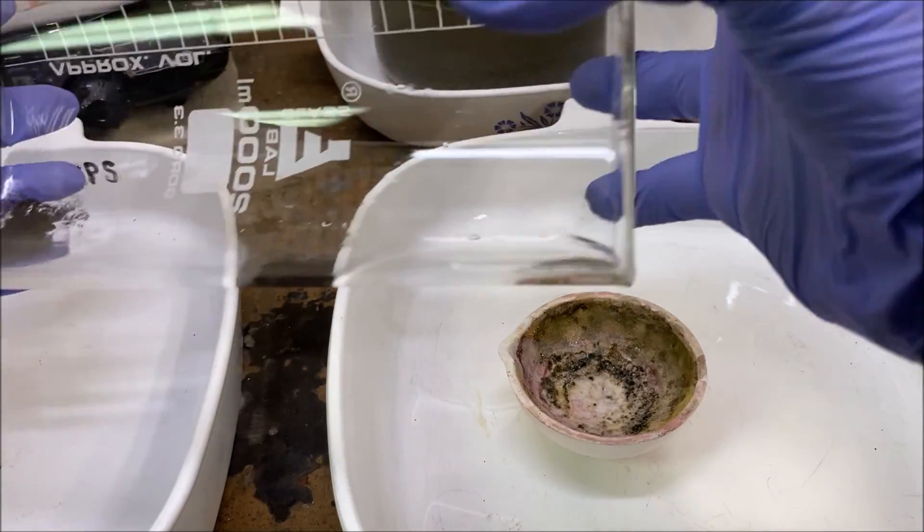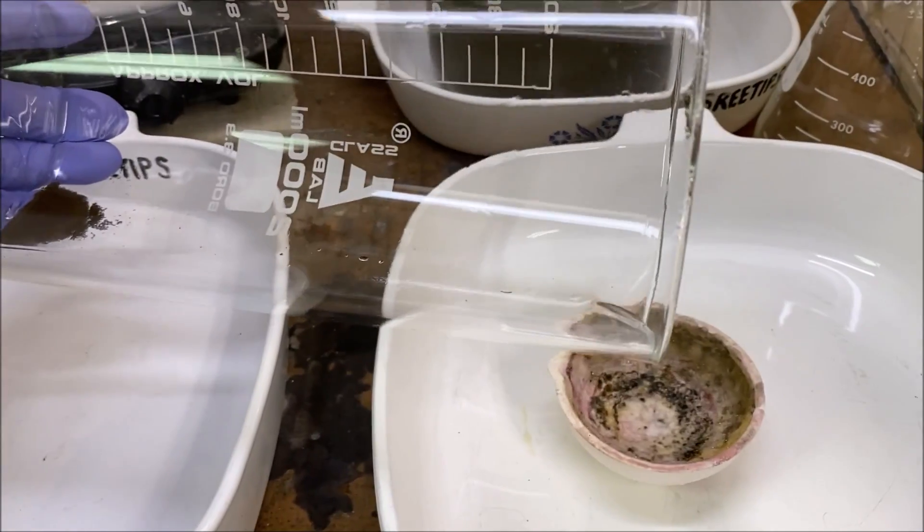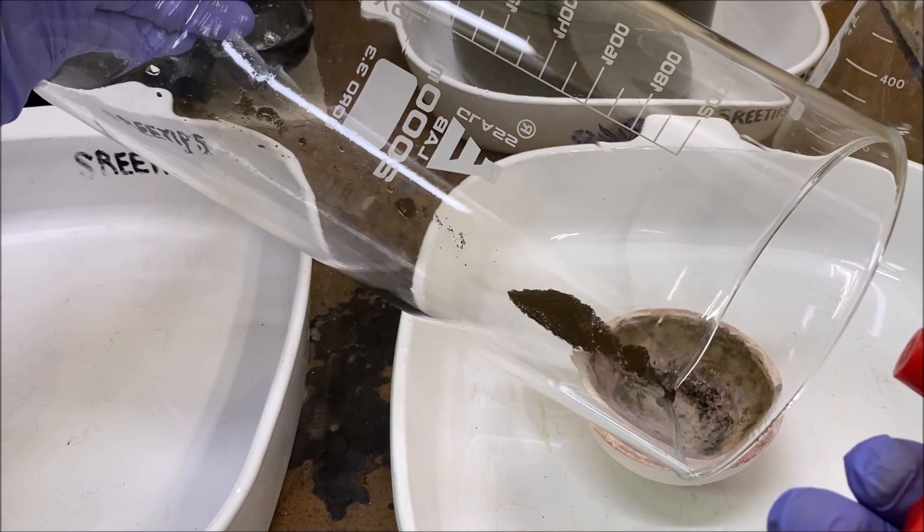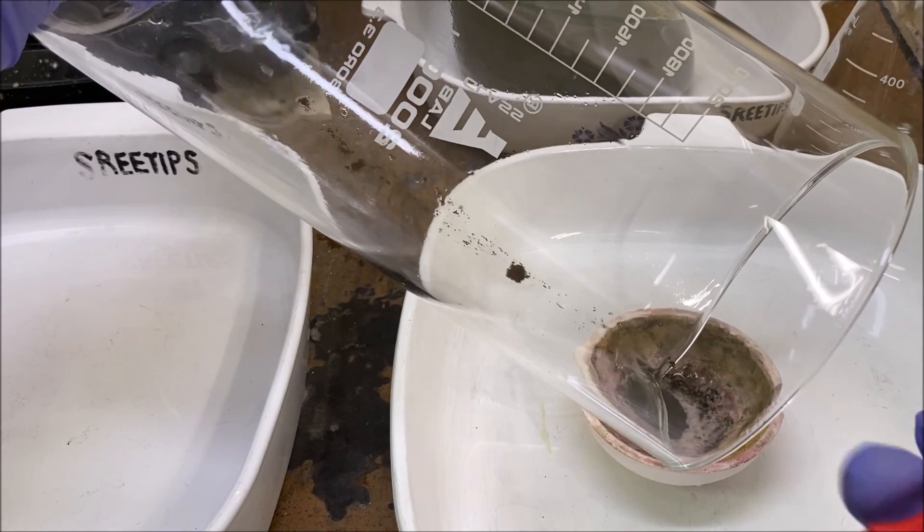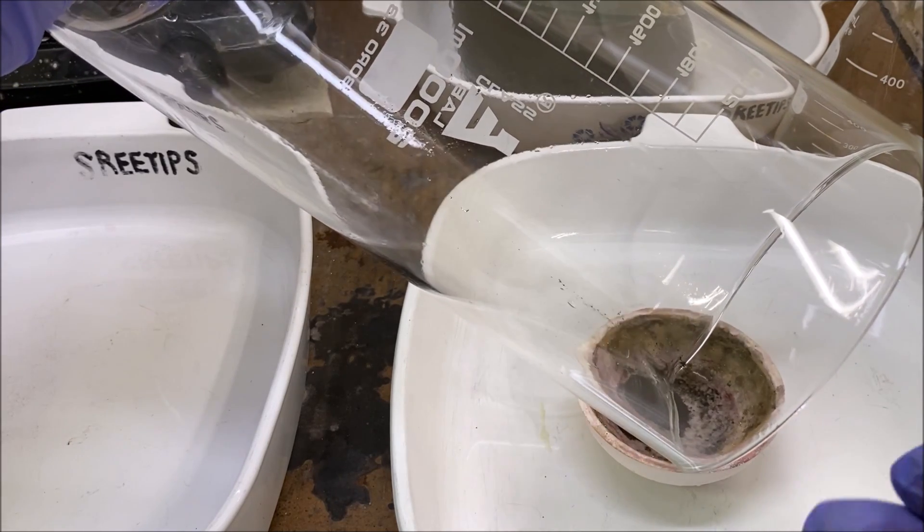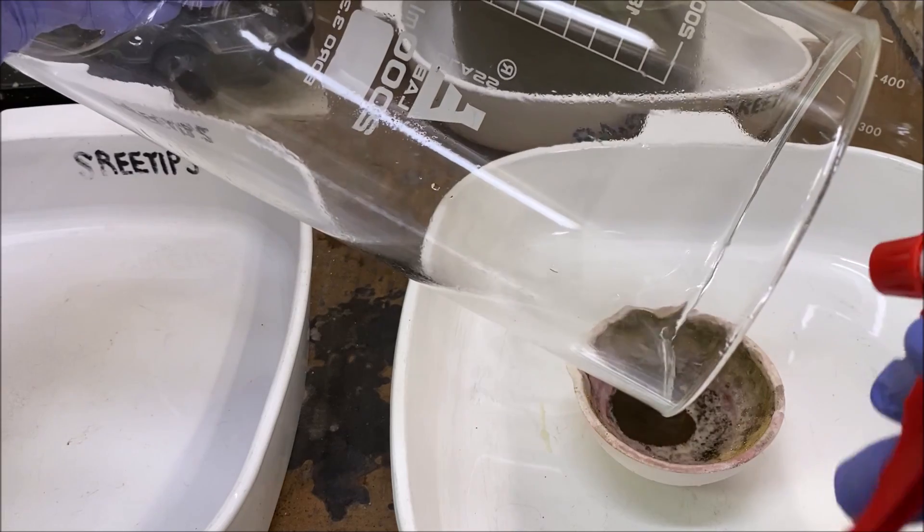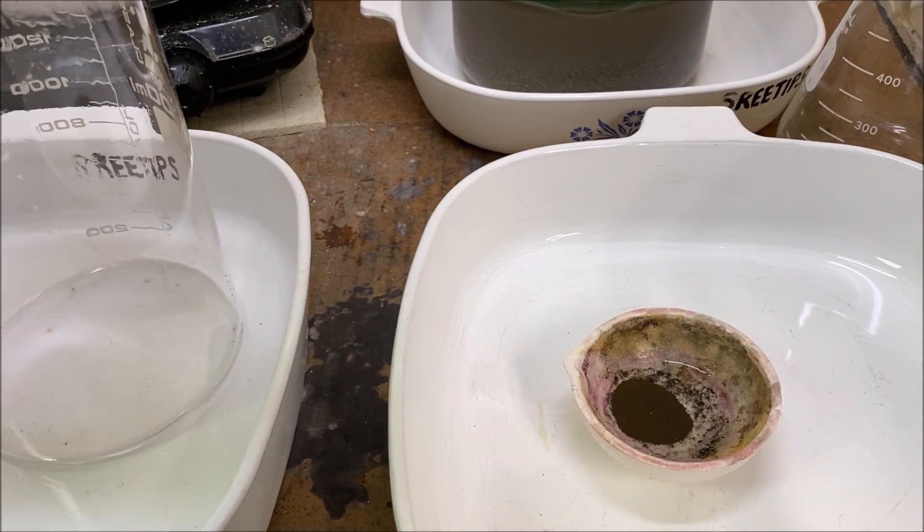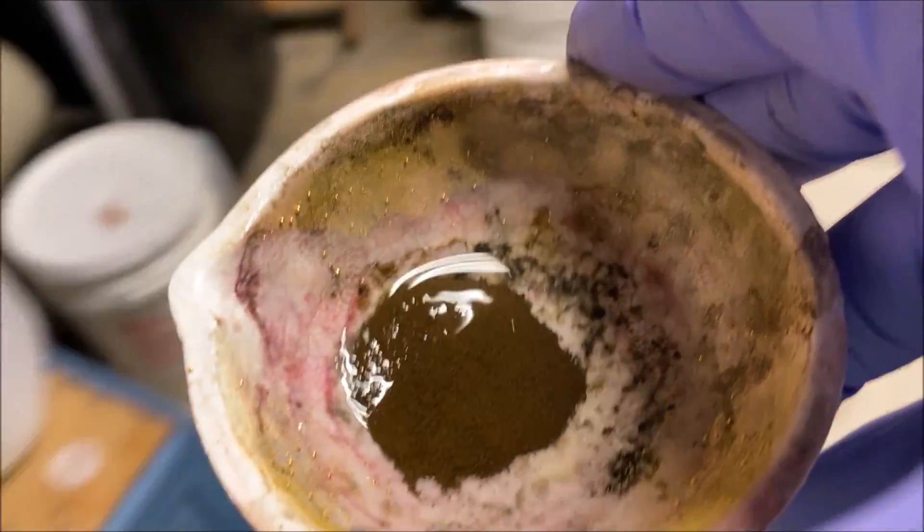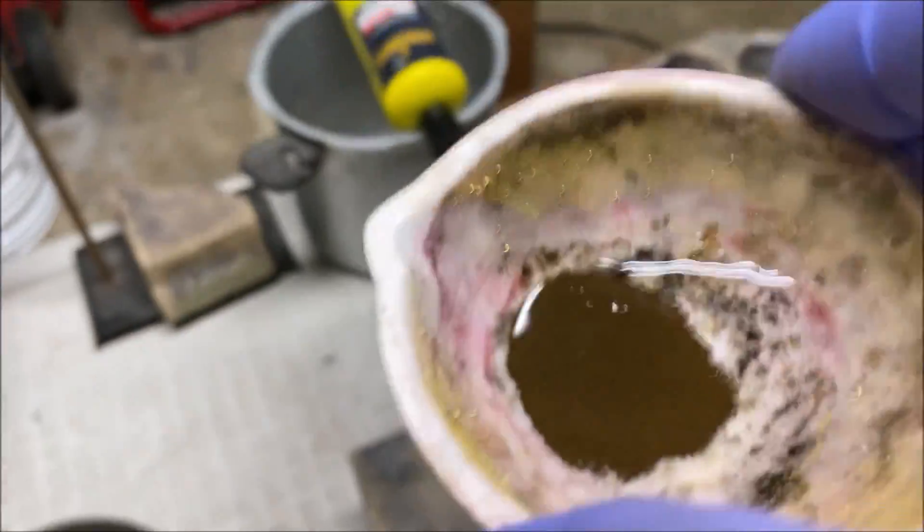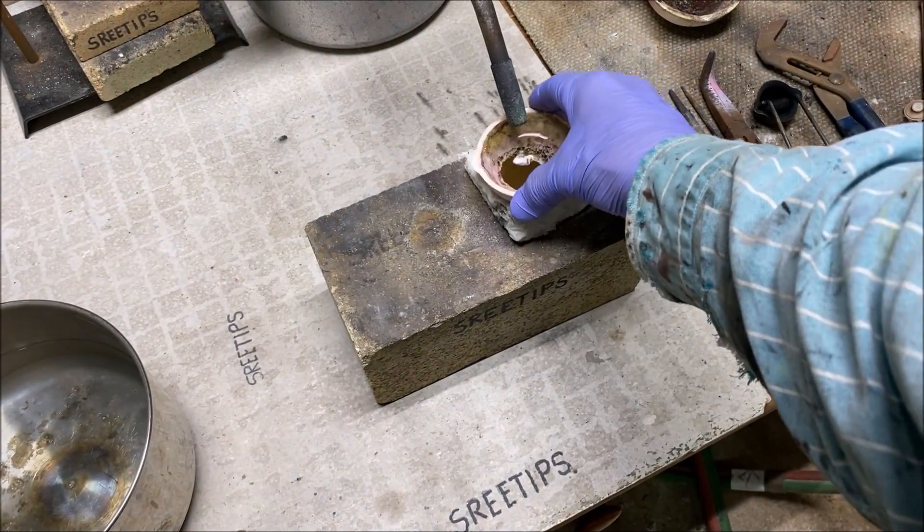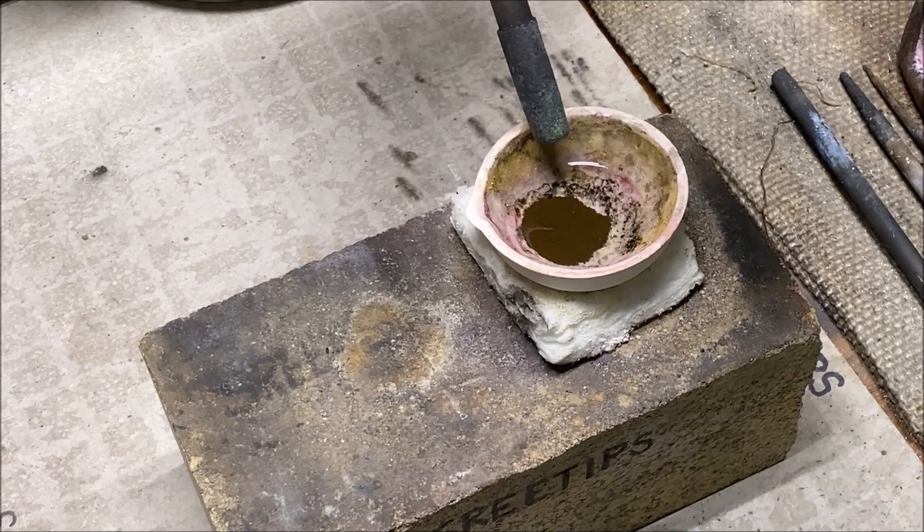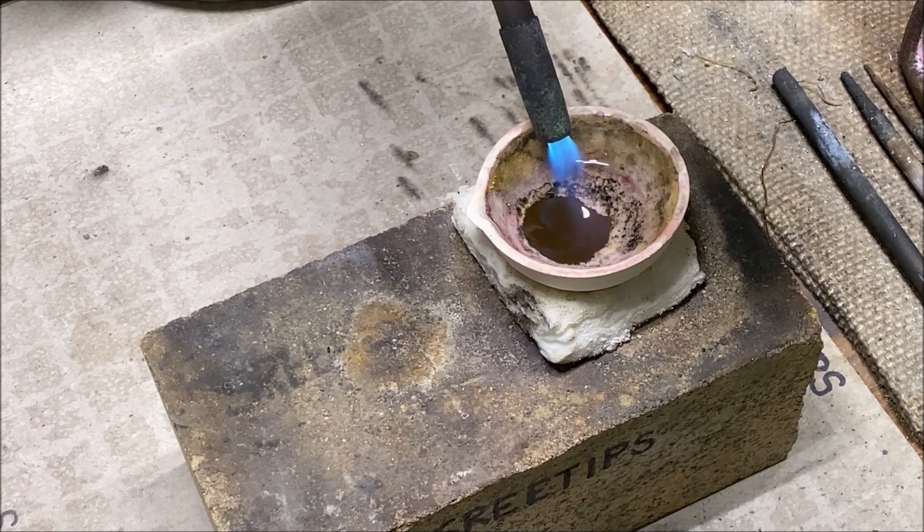Let's get this gold down into a melt dish, which isn't very much. Now we'll take it over here to the melt table and what we'll do is fire up our torch and melt us up a little bead of pure gold.